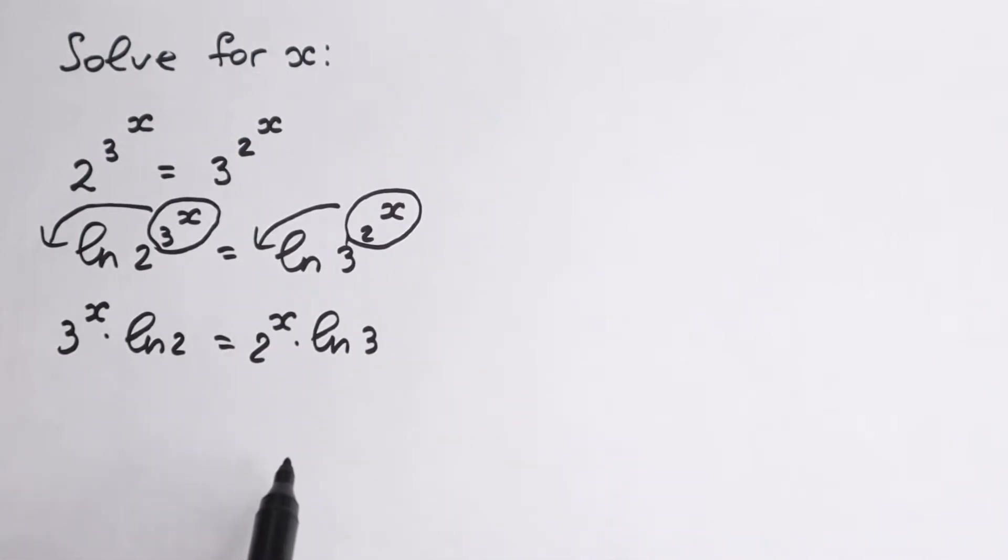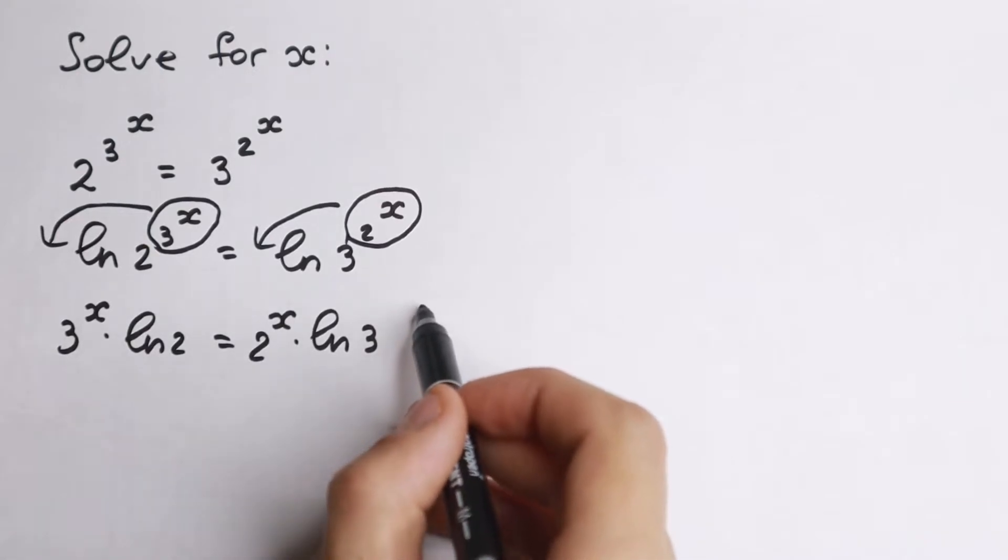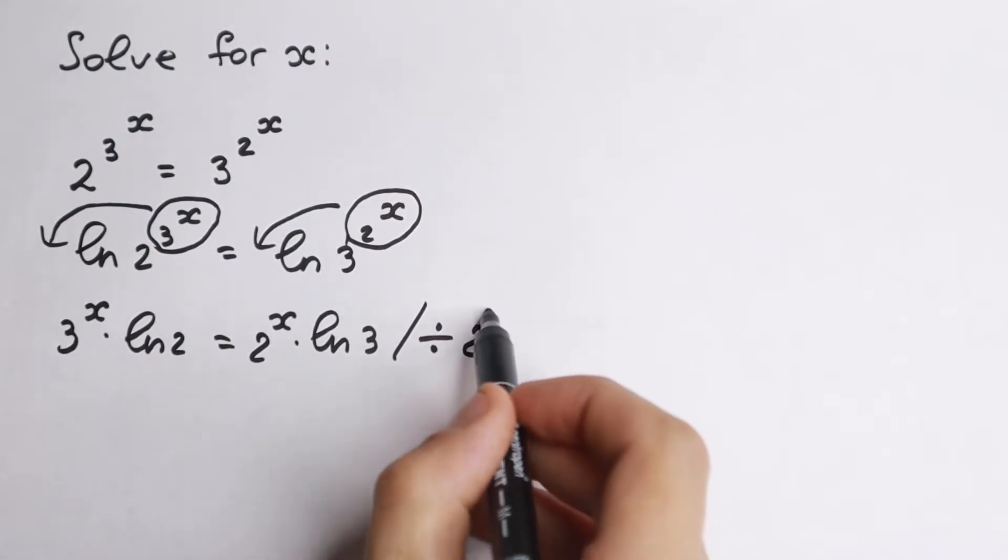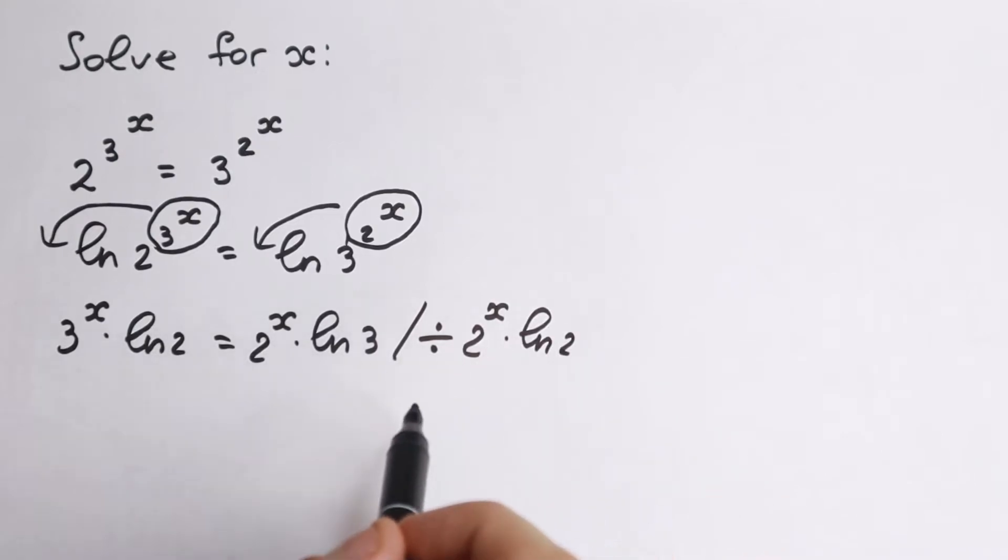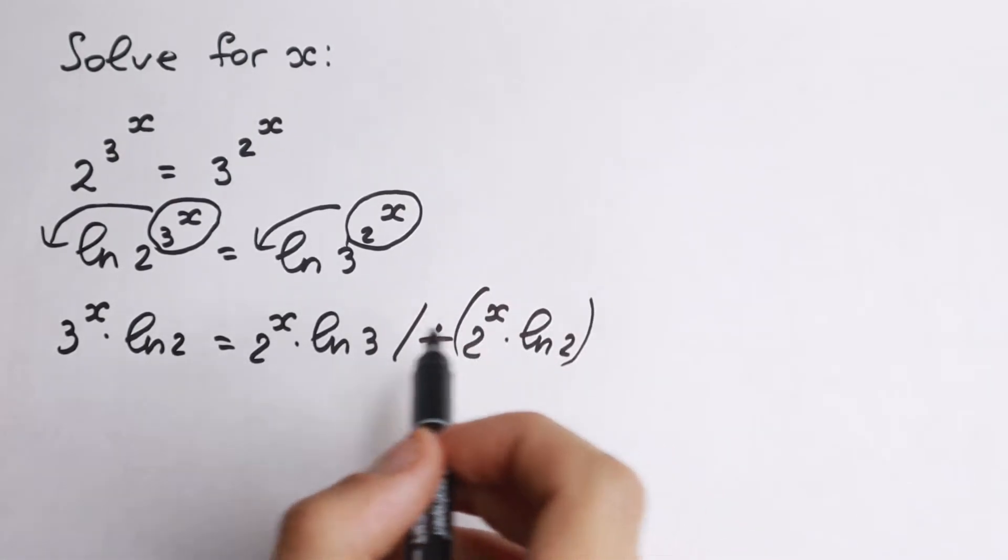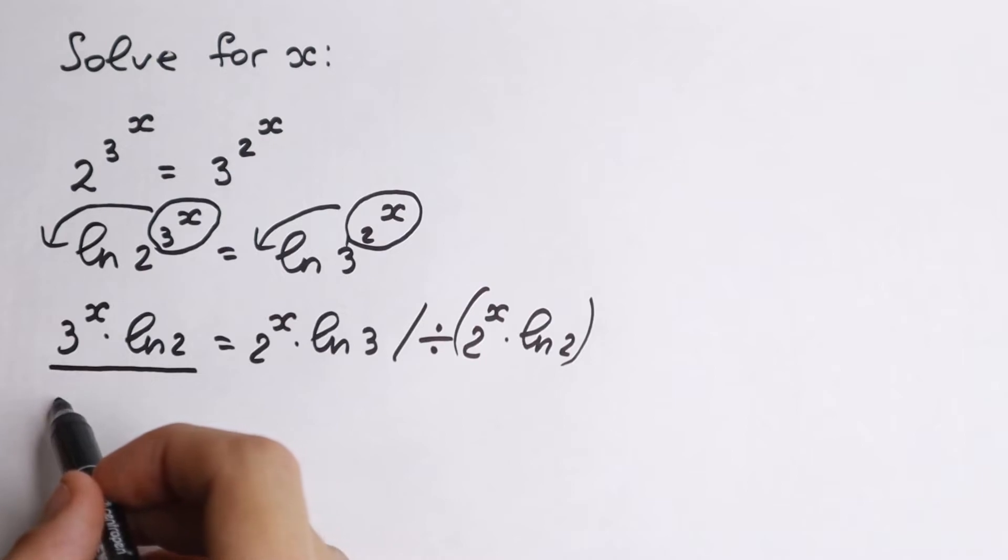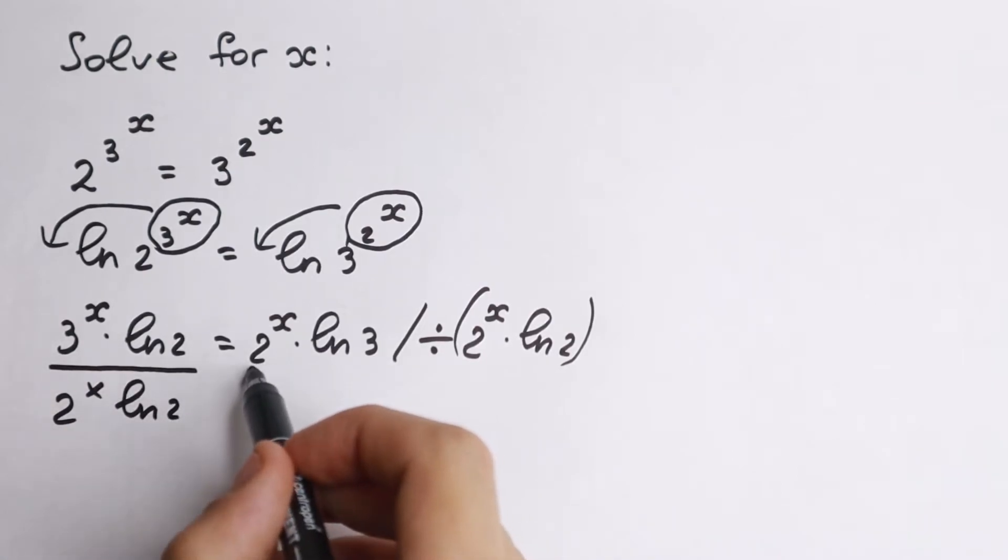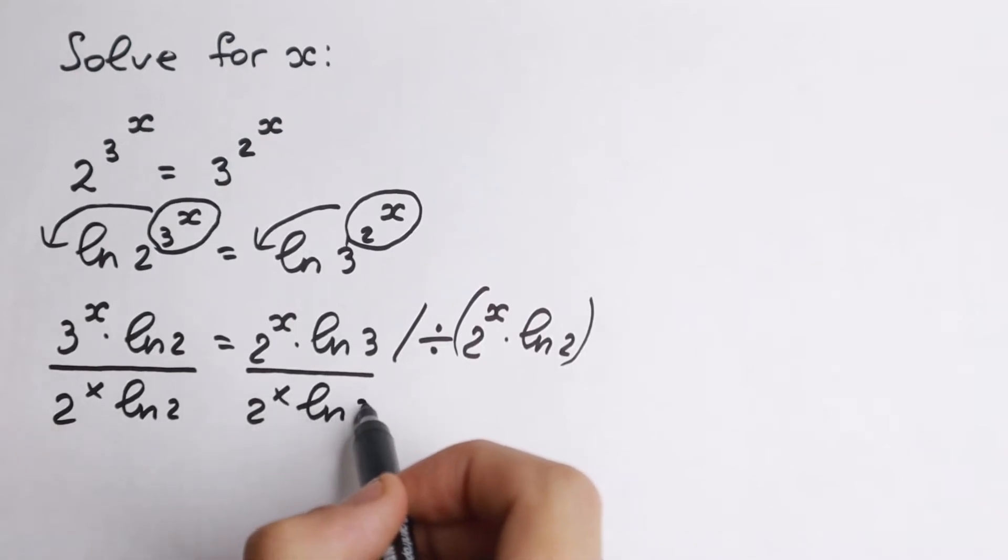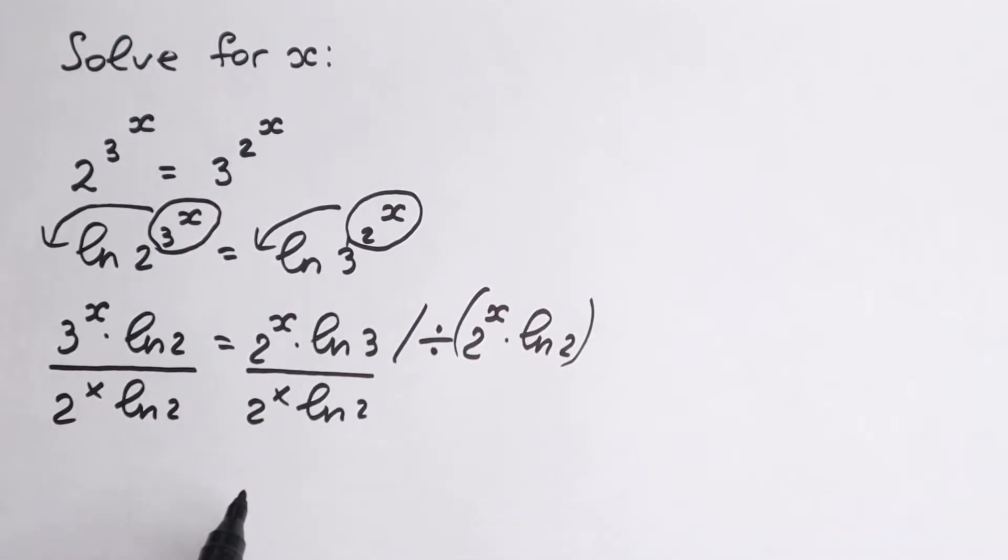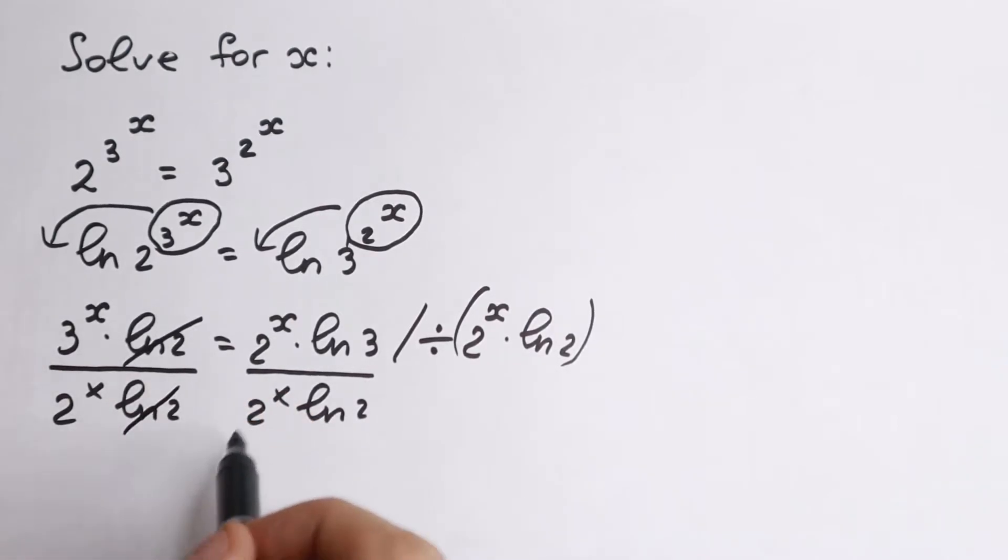And right now we need to write our variables on the left hand side and our constant on the right hand side. But how can we do this? Let's divide both sides by 2 to the x times natural log 2. So from here we cancel natural log 2, from here 2 to the x. I write it in a new line. So we divided this side by 2 to the x natural log 2, and right here 2 to the x natural log 2 as well. Dividing both sides by this same expression, canceling this, from here 2 to the x. As a result, 3 to the x over 2 to the x equal to natural log 3 over natural log 2. This is a constant on the right hand side.